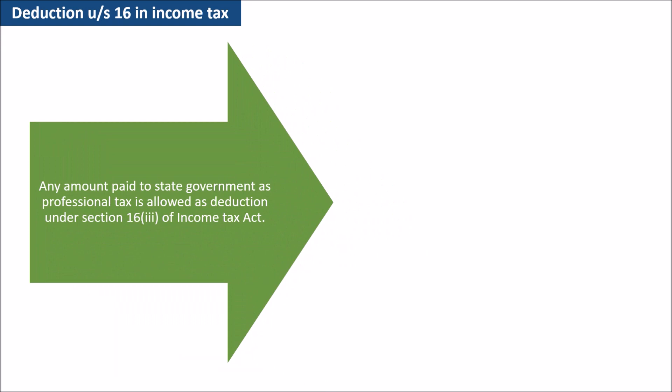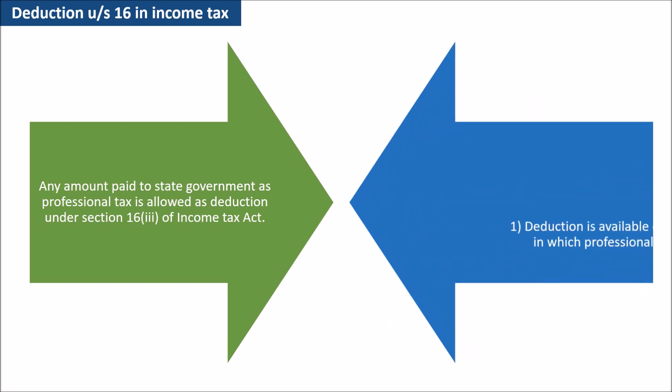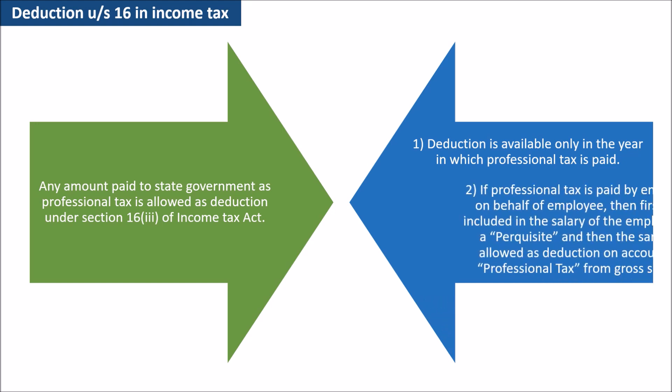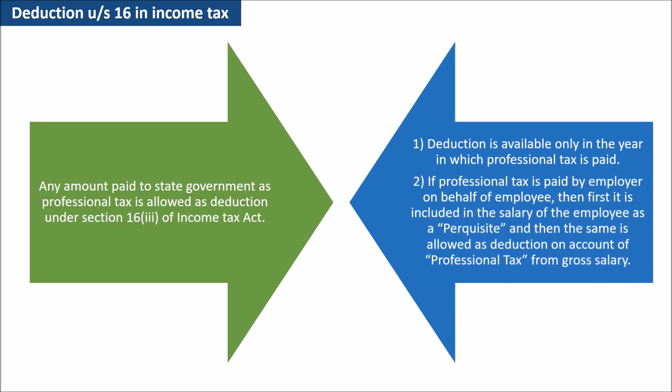The most important income tax provision for salaried employees is Section 16. Any amount paid to the state government as professional tax is allowed as deduction under Section 16(3) of the Income Tax Act. Deduction is available only in the year in which professional tax is paid. If professional tax is paid by the employer on behalf of the employee, then first it is included in the salary of the employee as a perquisite, and then the same is allowed as deduction on account of professional tax from gross salary.